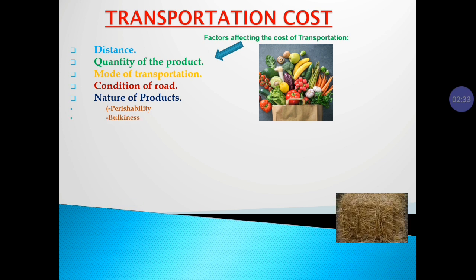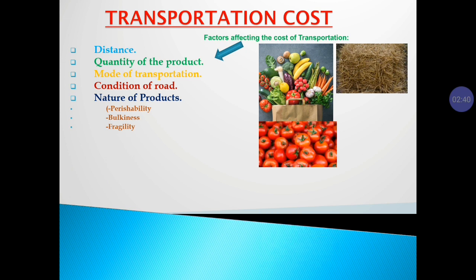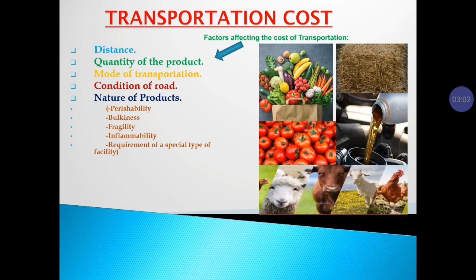The nature of the product includes bulkiness, fragility — meaning the quality of being easily broken or damaged — and inflammability, as in the case of petrol, meaning capable of being set on fire. There is also the requirement of a special type of facility, like in the case of livestock. The cost will depend on the nature of the products and the special type of care and facility needed.